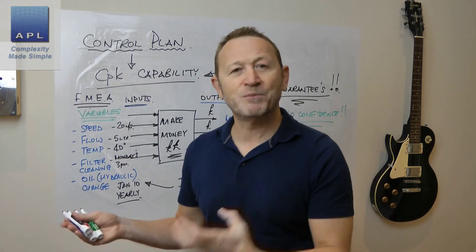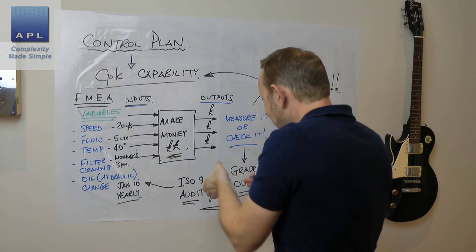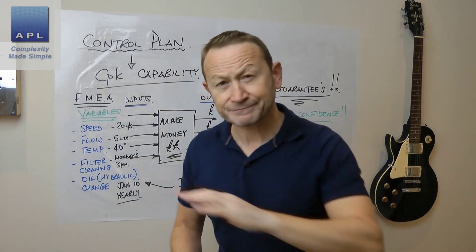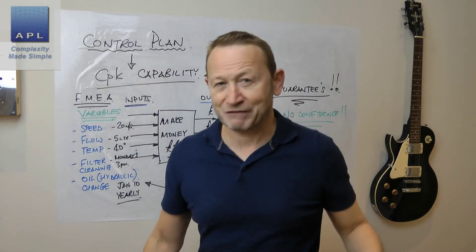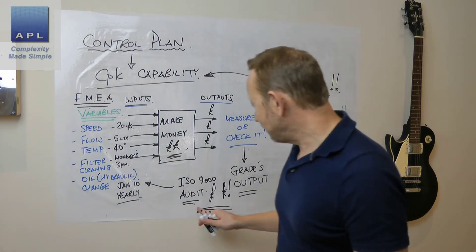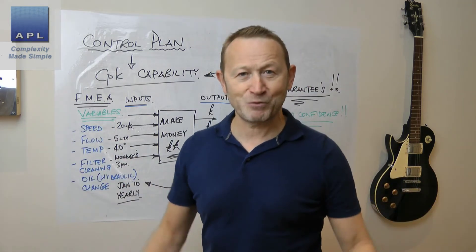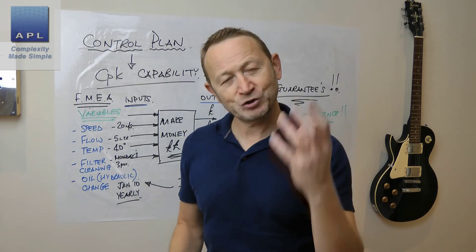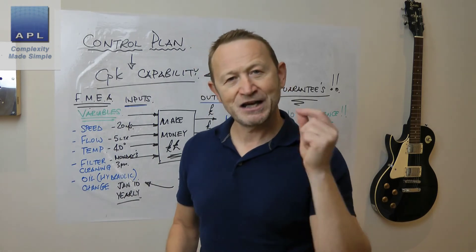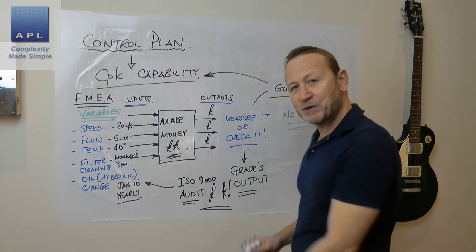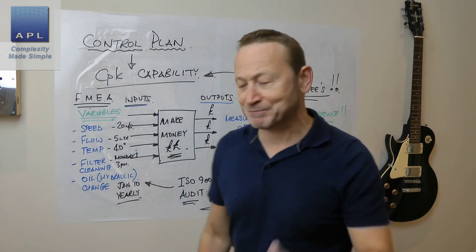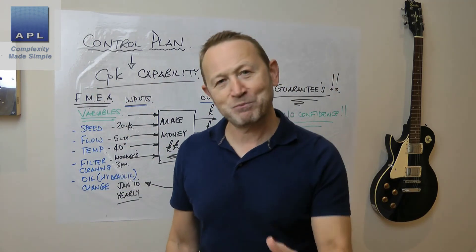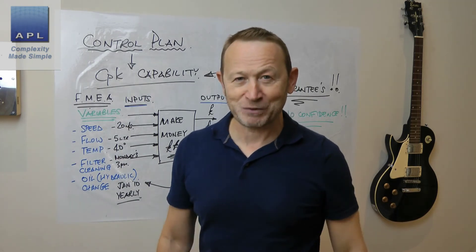They are not supposed to bury you in paperwork. If the control plan is not about inputs and not about making money, it will just bury you in paperwork and you'll never do it properly. You'll just end up, when the ISO 9000 auditor is due, tidying up your paperwork and hiding all the errors and problems so the auditor never finds them — which is a complete waste of money. If you're a senior manager watching this, get your ISO 9000 to make money. Create great control plans out of your FMEA and make piles and piles of cash — because that's what control plans are about.